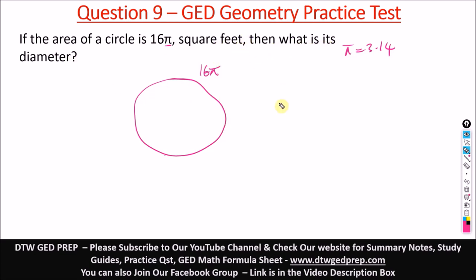If the area of the circle is 16π square feet, then what is its diameter? What's the area of the circle formula? It is A equals π r squared. So the question is asking for its diameter.